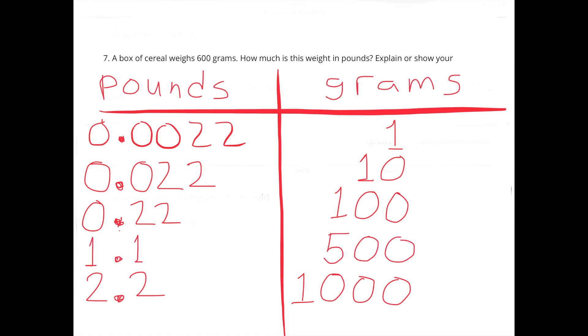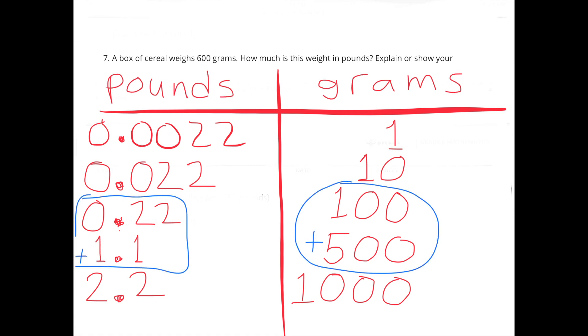2.2 pounds divided by 2 gets me to 1.1 pounds. 100 grams plus 500 grams equals 600 grams.